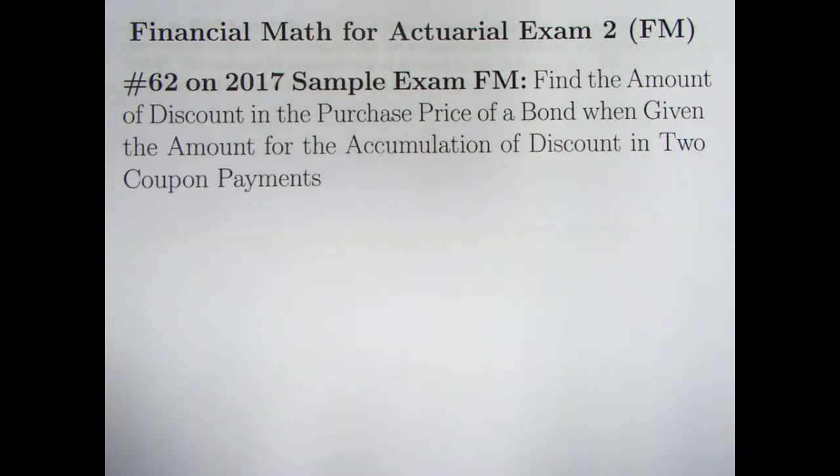Hello. I've been on a bit of a quest recently looking for more bond problems for which we can apply the formulas that we've derived in recent videos. Another good one I found is number 62 on the 2017 sample exam FM. We'll be finding the amount of the discount in the purchase price of a bond when we are given the amounts for the accumulation of discount in two coupon payments.